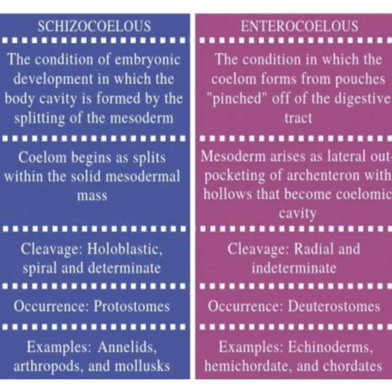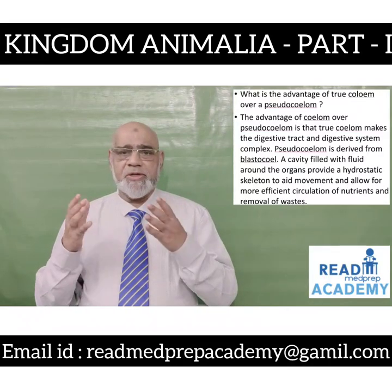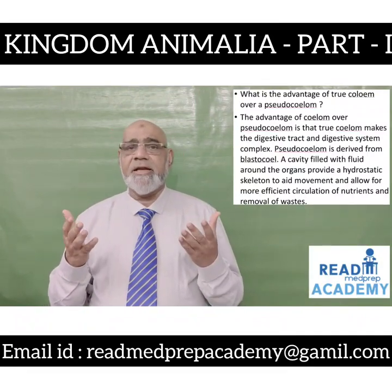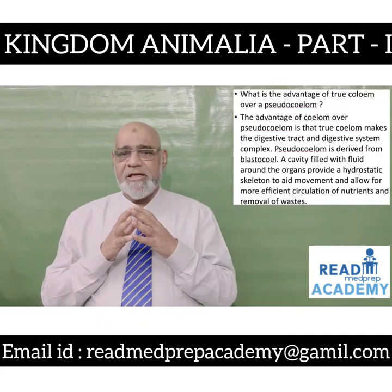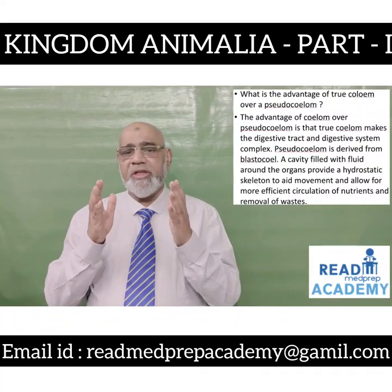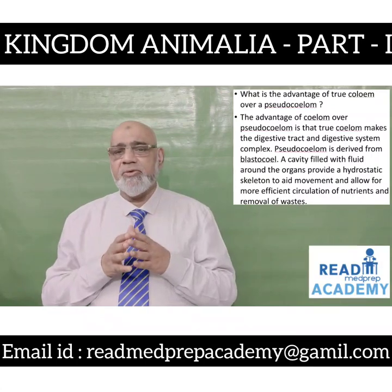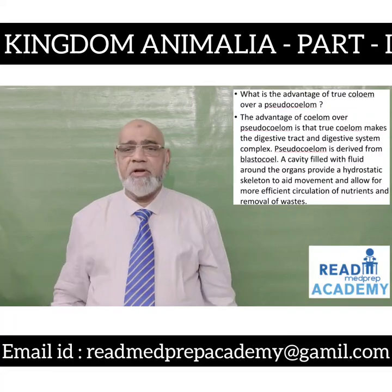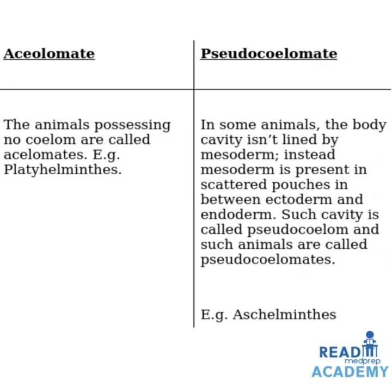Schizocoelom examples: annelids, arthropods and molluscs. Enterocoelom examples: echinoderms, hemichordates and chordates. The advantage of true coelom over pseudocoelom is that true coelom makes the digestive system complex. Pseudocoelom is derived from the blastocoele, a cavity filled with fluid around the organs, providing a hydrostatic skeleton to aid movement and allowing more efficient circulation of nutrients and removal of waste. Acoelomate animals possess no coelom; in pseudocoelomates the body cavity is not lined by mesoderm but mesoderm is present in scattered pouches between ectoderm and endoderm. Example of acoelomate: Platyhelminthes. Example of pseudocoelomate: Aschelminthes.